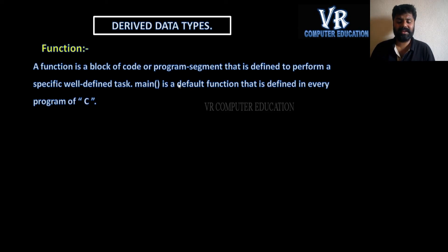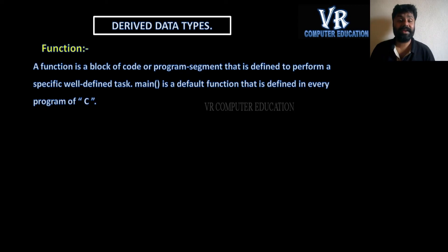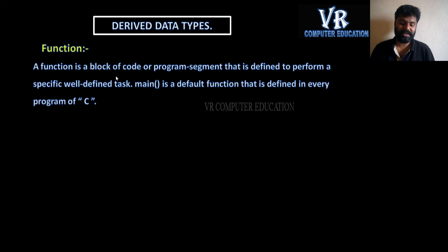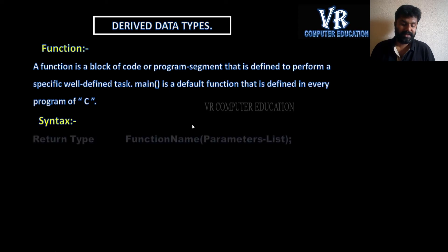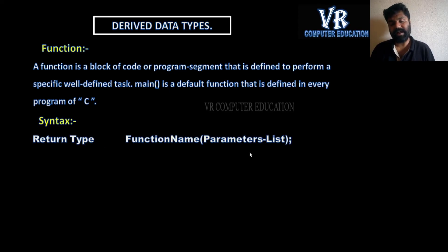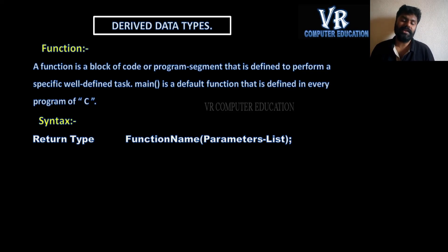For example, main is the default function defined in every C program. Every C program starts with the main function because without main the program cannot be executed. The syntax is: return type, function name, parameter list. The return type can be void — meaning it will not return anything — or int, float, double, returning the respective value types.